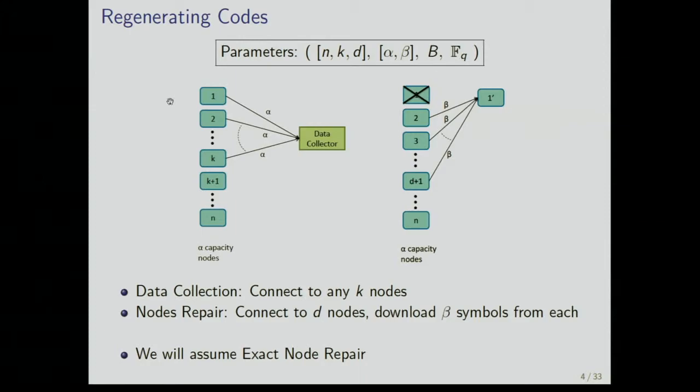The other property, which is the focus of a lot of attention these days, is that what if one of these nodes fails, then what you should be able to do is you should be able to connect to a subset of D nodes, often D is N minus one, as it is in my talk, and download beta symbols that are alpha in each node, but you download a smaller number beta and repair this node. The hope is that D times beta will be significantly smaller than the size of the file. So, you're able to repair without by downloading amount of data that's comparable to how much you're going to store, as opposed to what you do with Reed Solomon codes, which there is no really very efficient way of doing it.